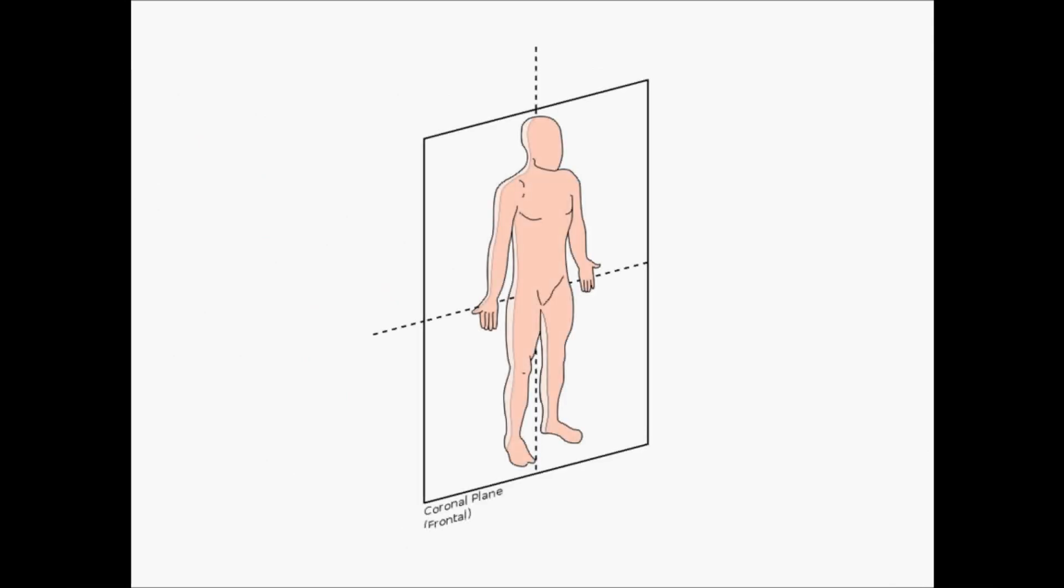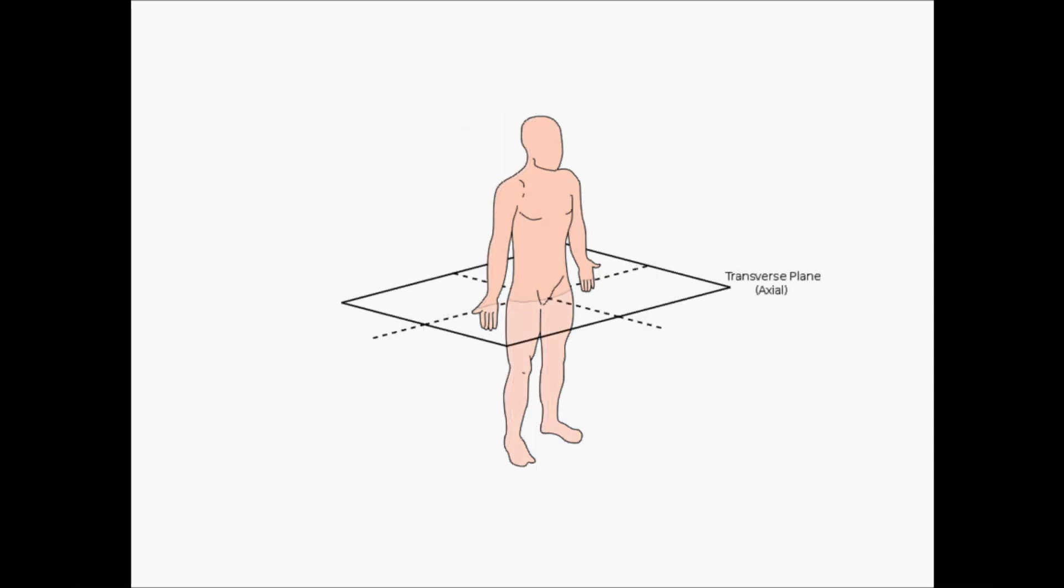So all the leads we've looked at so far have given us a two-dimensional view of the heart, because we've been working in the coronal plane. But the heart is three-dimensional. It extends inferiorly and anteriorly in the chest, and so we need to look at it from a different angle as well. So now we're going to be working in the transverse plane.